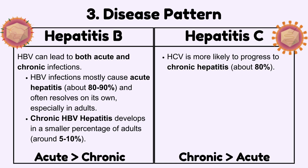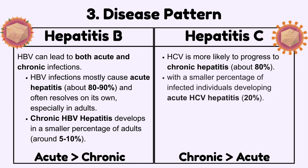Hepatitis C, on the other hand, is more likely to progress to chronic hepatitis, about 80 percent, with a smaller percentage of infected individuals developing acute hepatitis C, 20 percent.